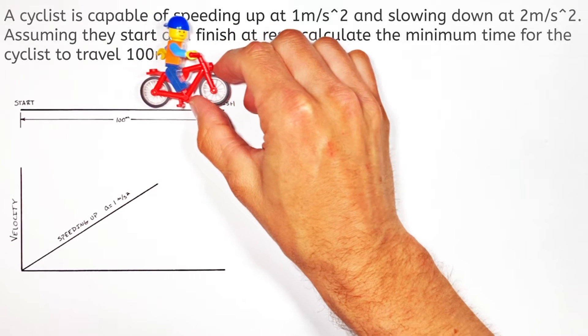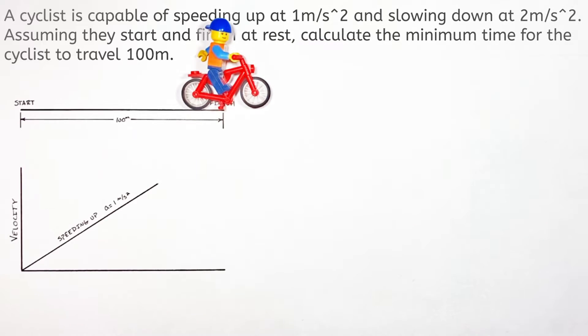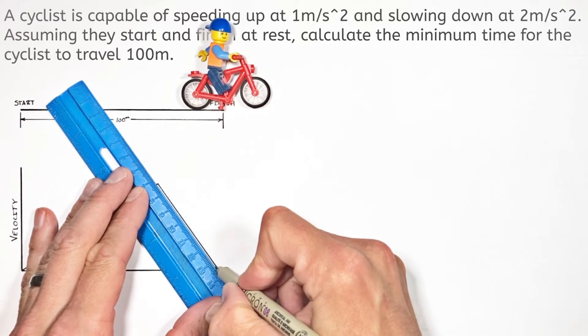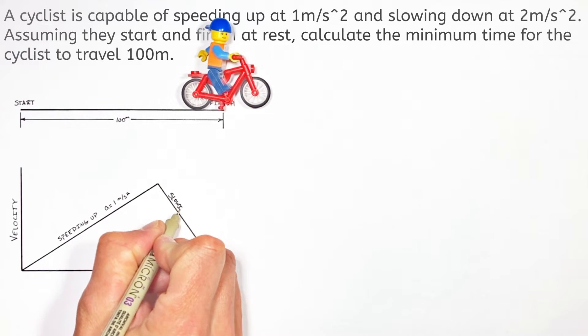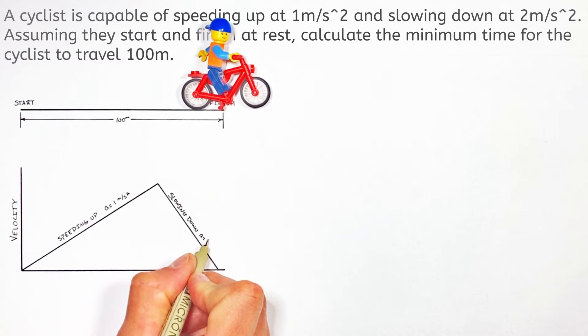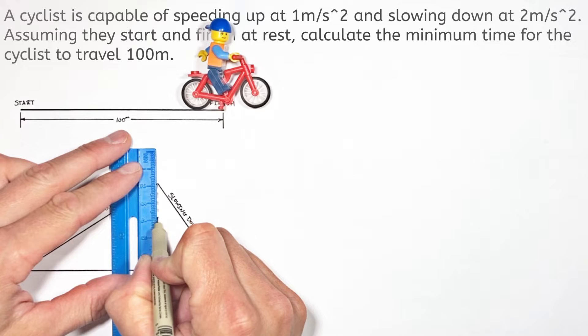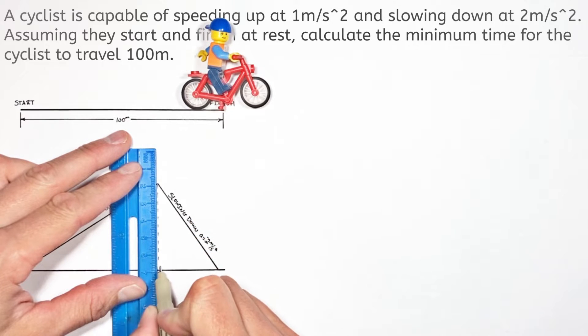Then after a certain amount of time, and we don't know how much time that is, he's going to have to hit the brakes and slow down to rest. So on our graph we're going to see suddenly the velocity starts decreasing with a slope of negative 2 meters per second squared. And it's using this graph of velocity versus time that we're going to be able to generate a system of equations that we can use to solve this problem.